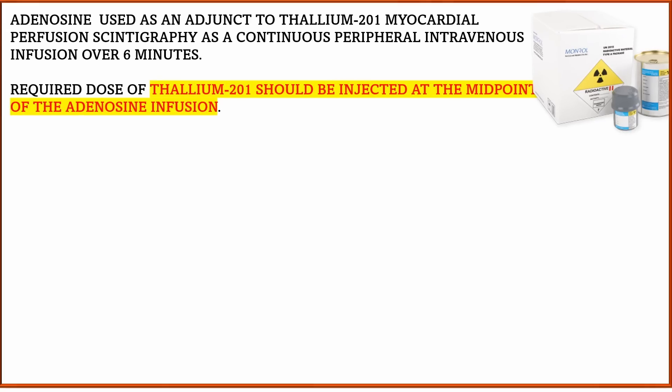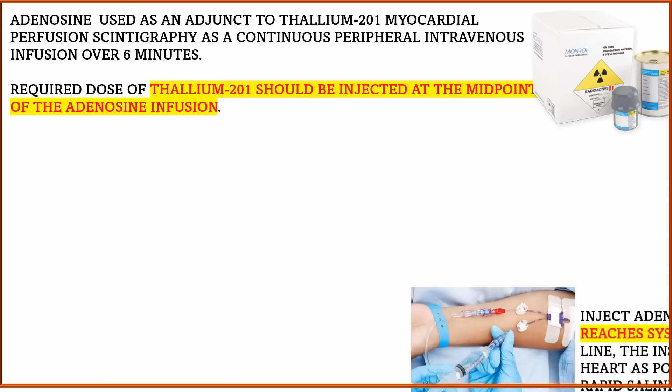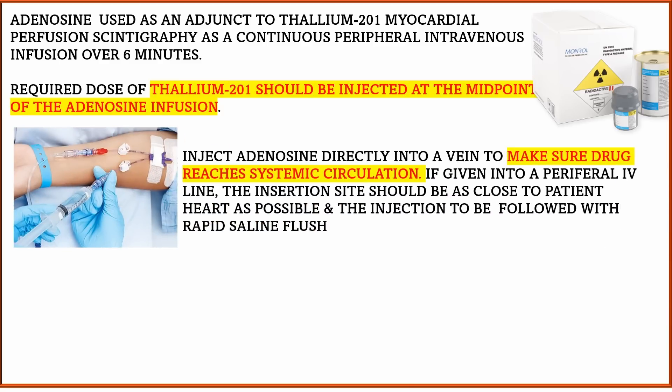Fourth, during thallium-201 myocardial perfusion scintigraphy, Injection Adenosine should be given as a continuous peripheral infusion over 6 minutes. The required dose of thallium-201 should be injected at the midpoint of the Adenosine infusion, as thallium-201 is compatible with Adenosine. Fifth, Injection Adenosine should always be given directly into a vein to ensure the drug reaches systemic circulation. If given into a peripheral IV line, the insertion site should be as close to the patient's heart as possible, followed by a rapid saline flush.